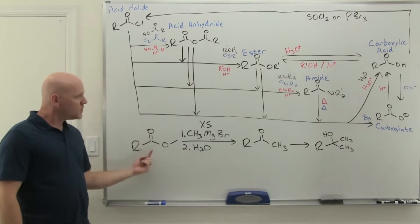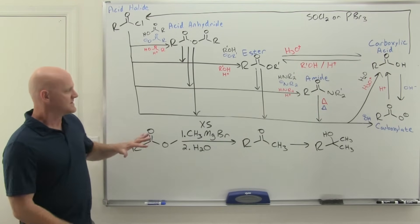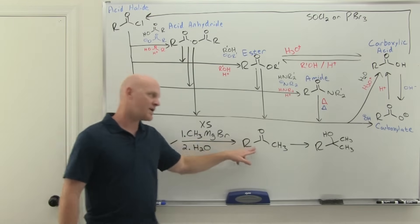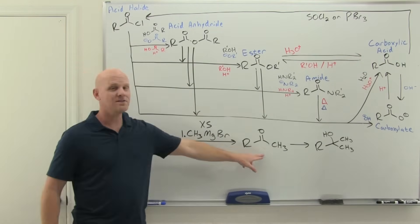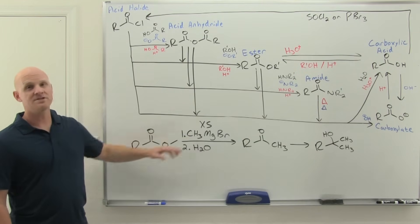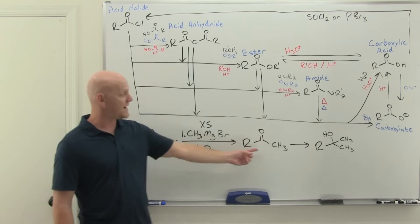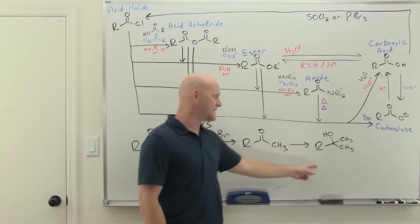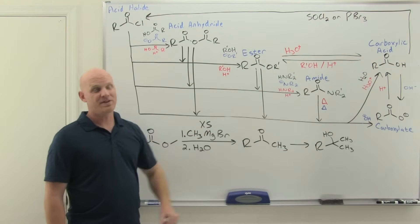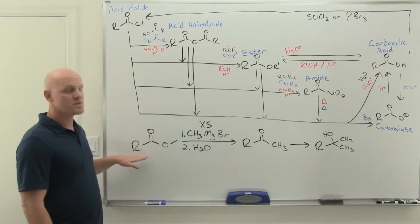You might ask what if you try to add only one equivalent of Grignard to stop at the ketone. With esters, it's not going to work out well. The reason is that the ketone product is actually more reactive — a better electrophile than your ester. So if you had 10 equivalents each, by the time the first five esters react, you've made five ketones, and the remaining five Grignards will preferentially react with those ketones rather than the remaining esters, giving you the alcohol. You must go with excess Grignard to get the tertiary alcohol as the major product.